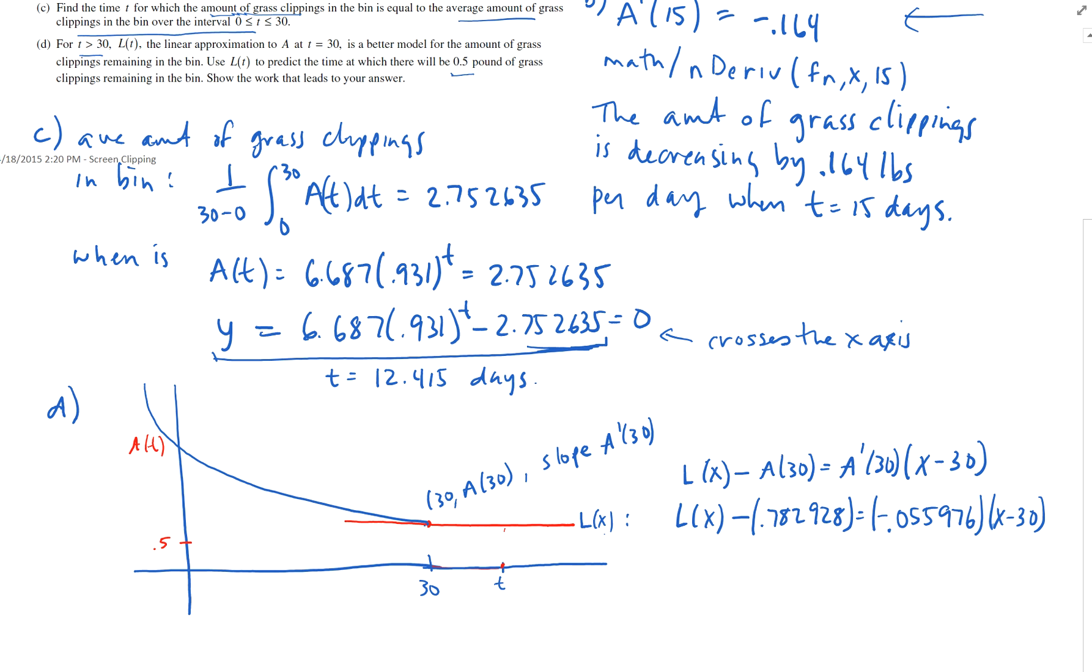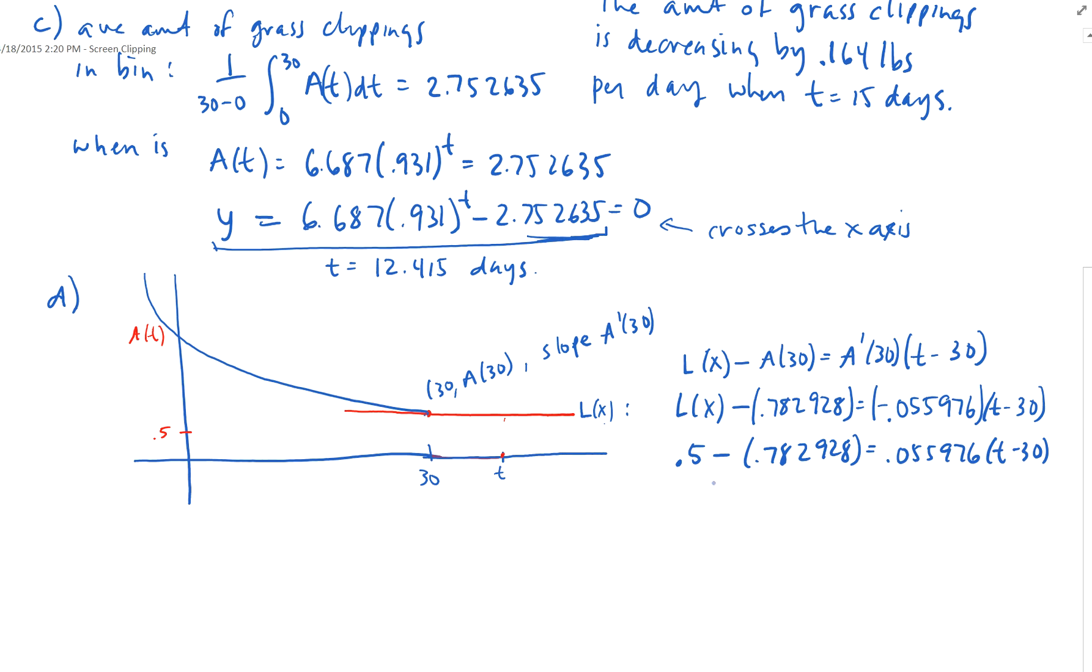I apologize, I did write x over here, and I should have written t, because this is my x axis is really my time, or t. So, when L of x, or my Y is 0.5, so I've got 0.5 minus 0.782928 equals 0.055976 times t minus 30. And the way that I would do this, is I would just do this all in my calculator in one shot.